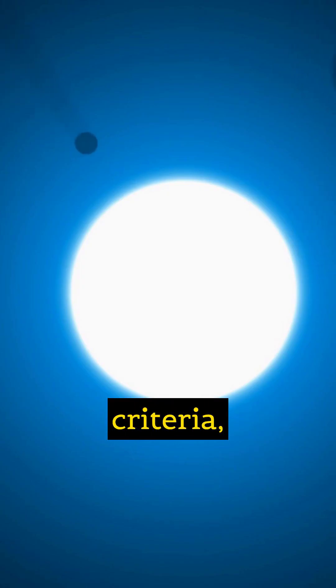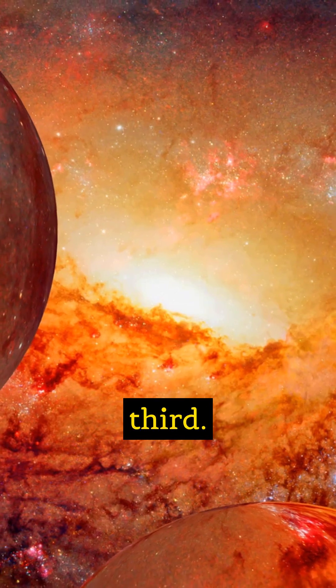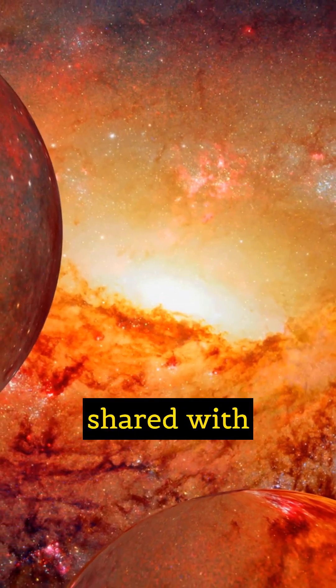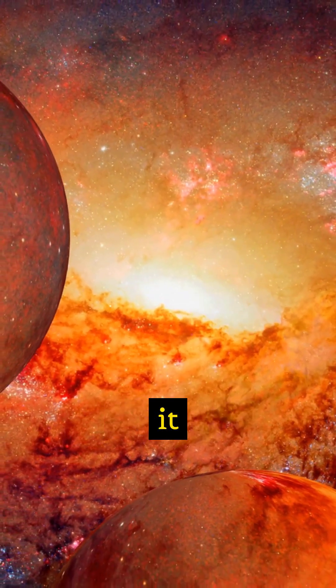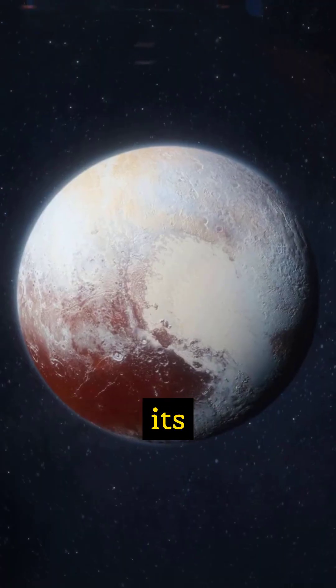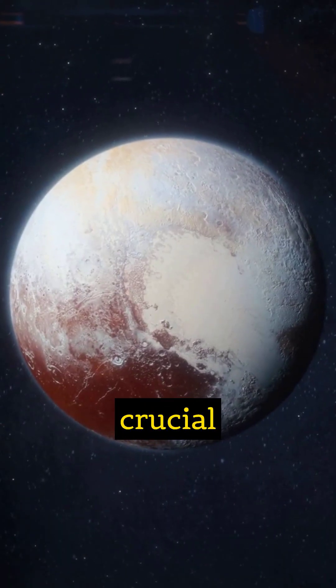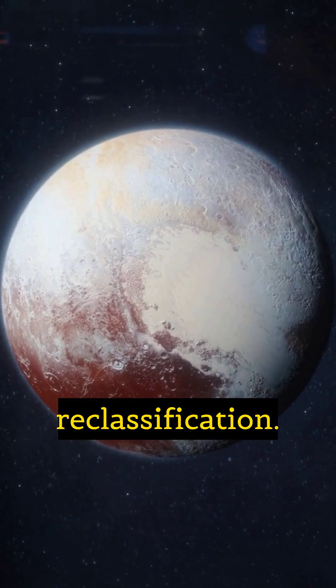Pluto met the first two criteria, but it failed the third. Its orbit is shared with many other Kuiper Belt objects, meaning it hasn't gravitationally cleared its path. This crucial distinction led to its reclassification.